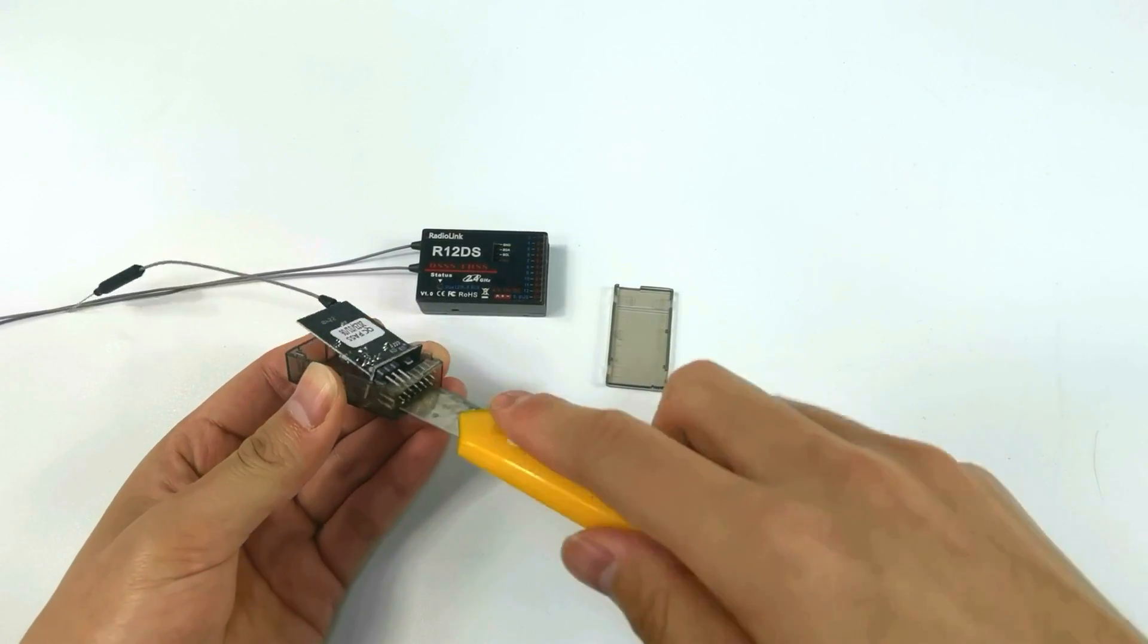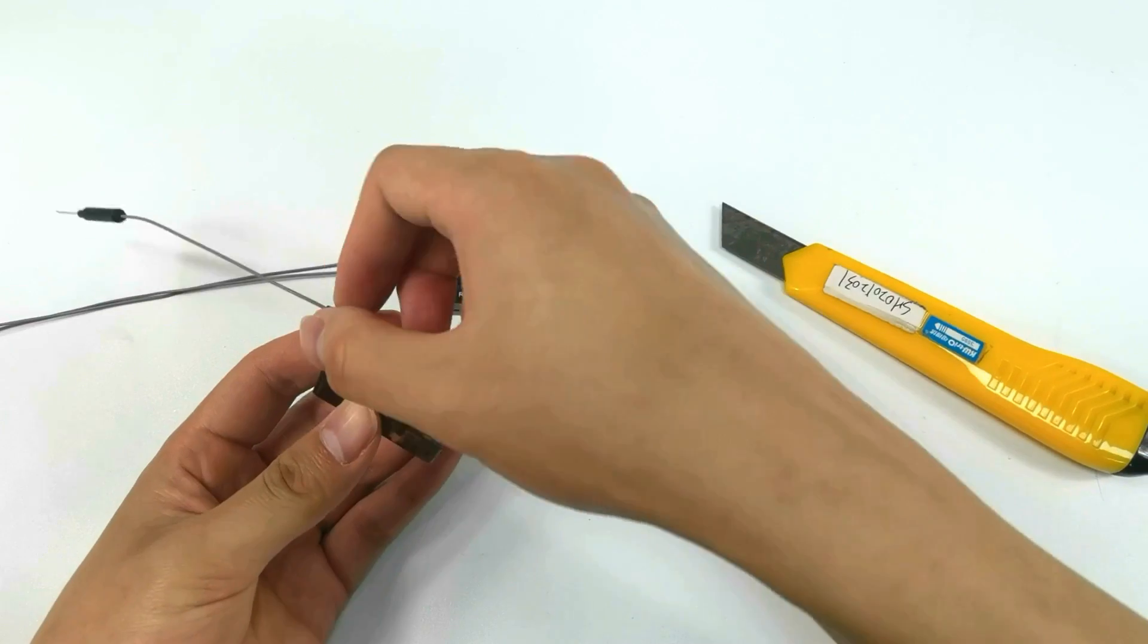Insert the knife, pry the knife back and forth until the board can be taken out.